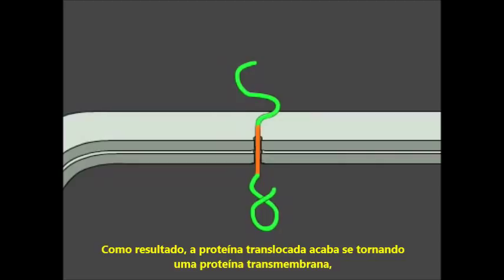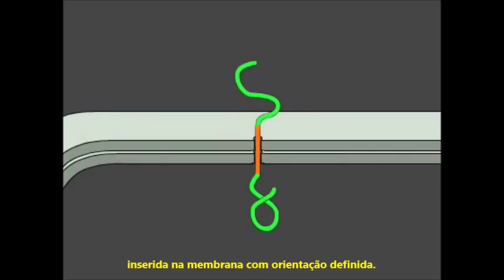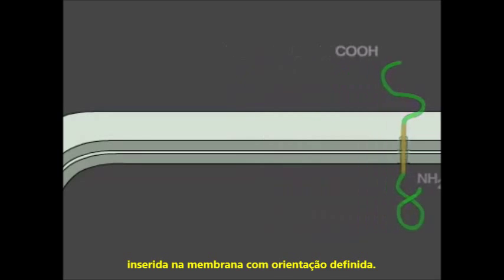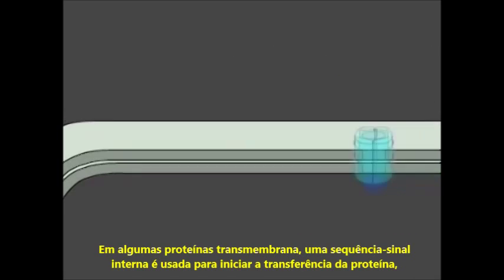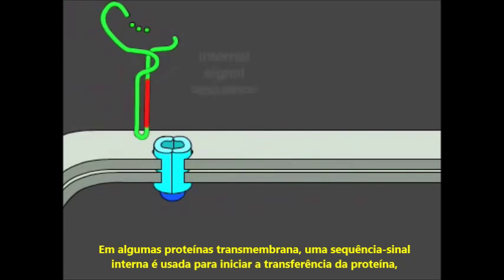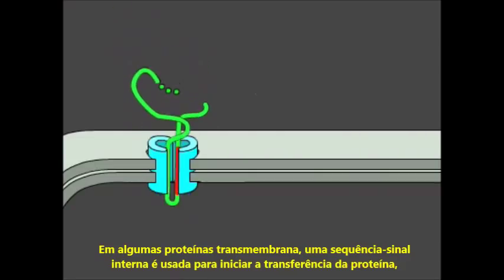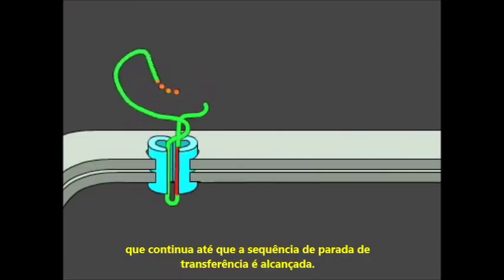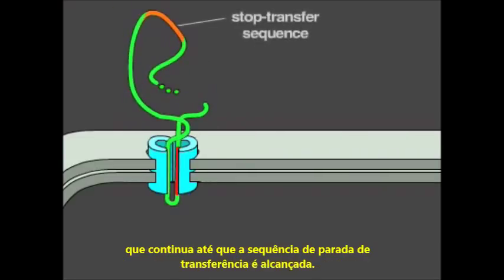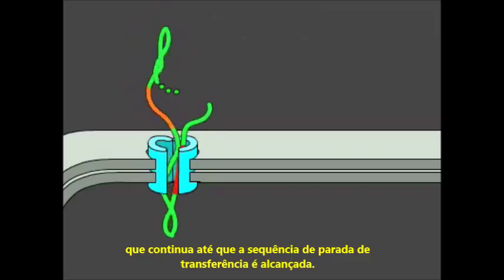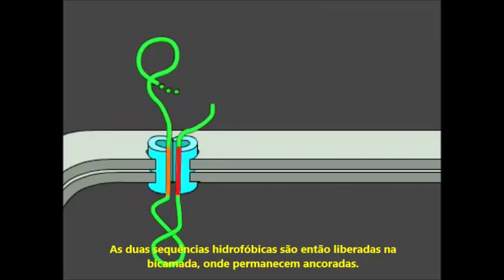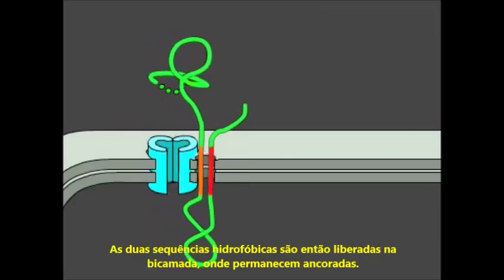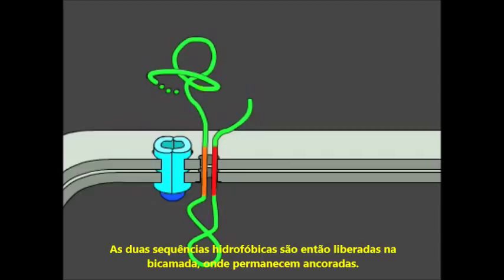As a result, the translocated protein ends up as a transmembrane protein inserted in the membrane with a defined orientation. In some transmembrane proteins, an internal signal sequence is used to start the protein transfer, which continues until a stop-transfer sequence is reached. The two hydrophobic sequences are then released into the bilayer, where they remain anchored.